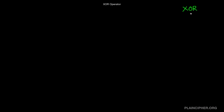In this video, I will explain to you the XOR operator. The XOR operator is a Boolean algebra operator, and it stands for exclusive OR. Its symbol looks like a circle with a plus sign in the middle. What the XOR operator does is it will return true if and only if exactly one of your input values is true.